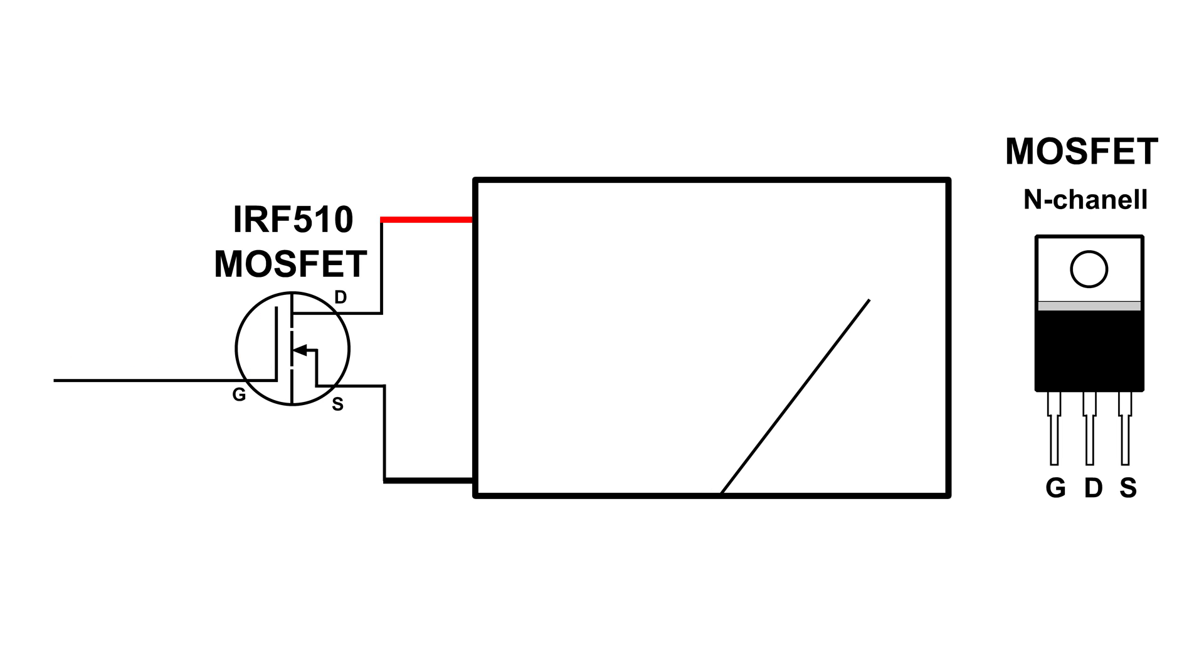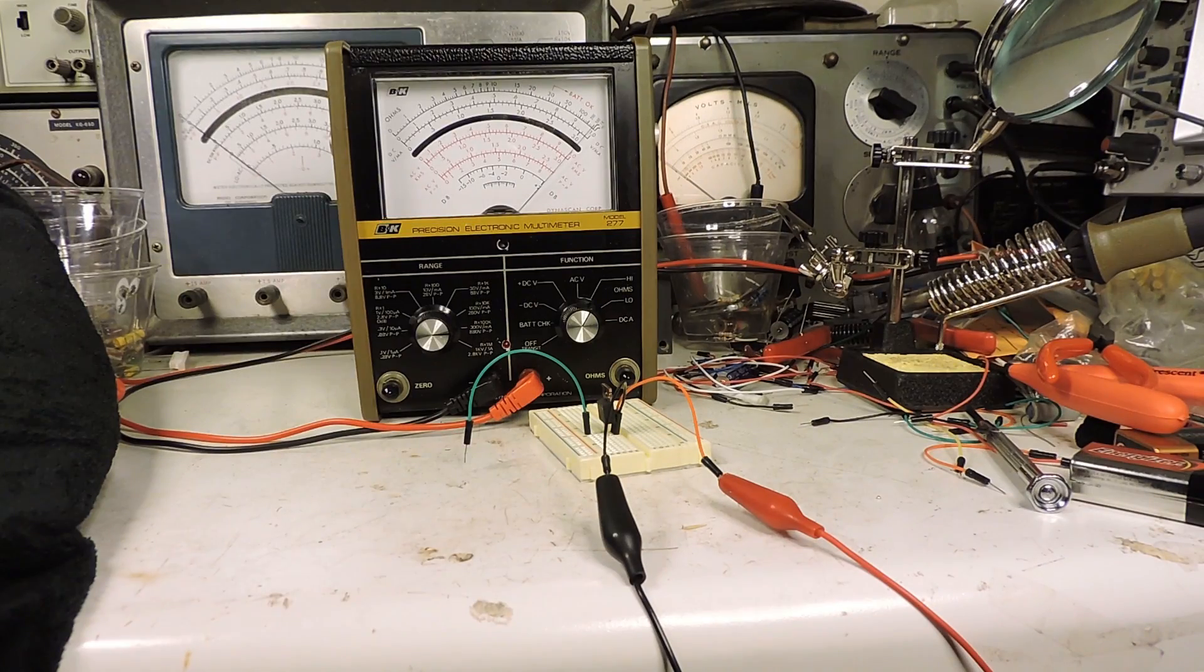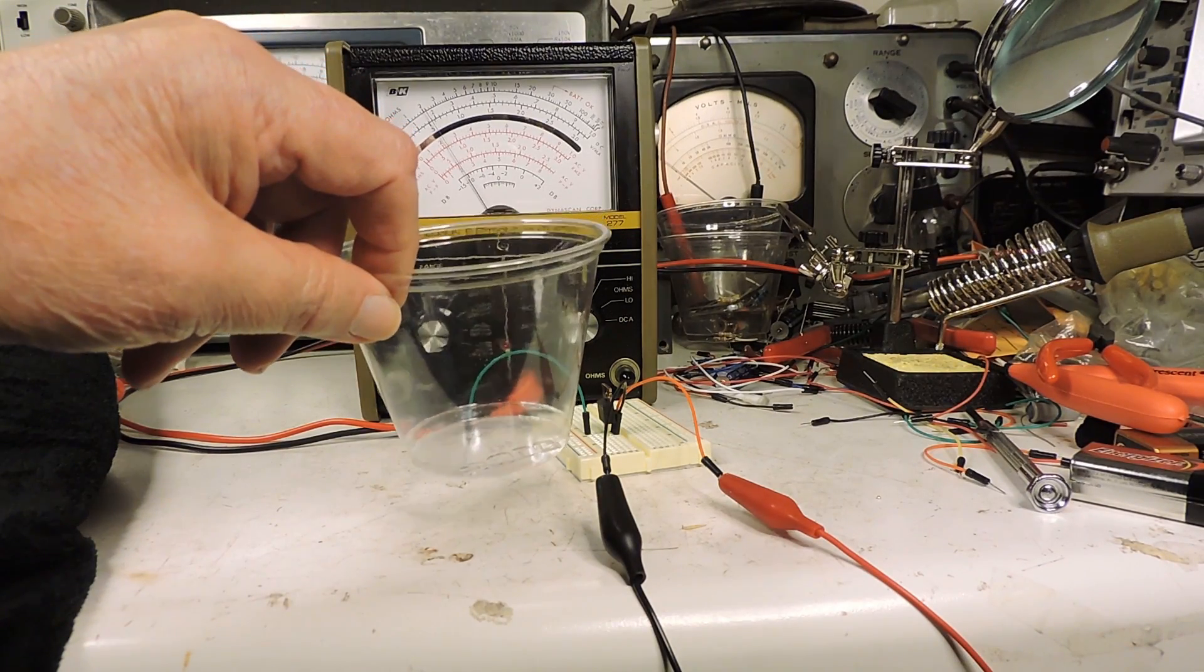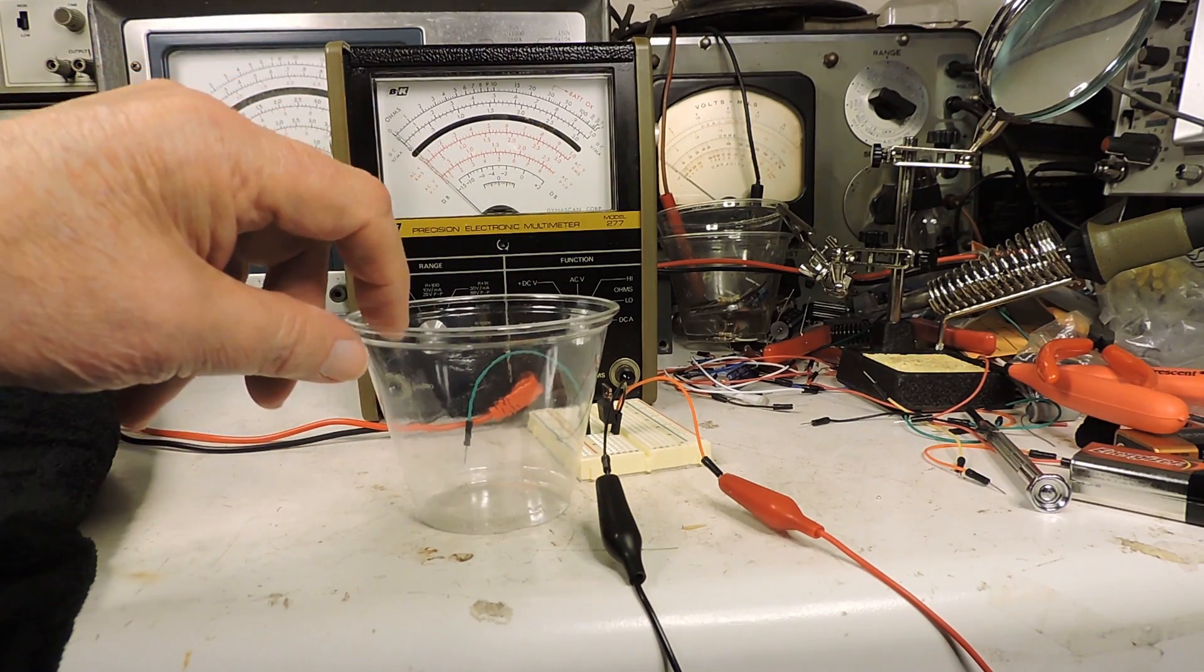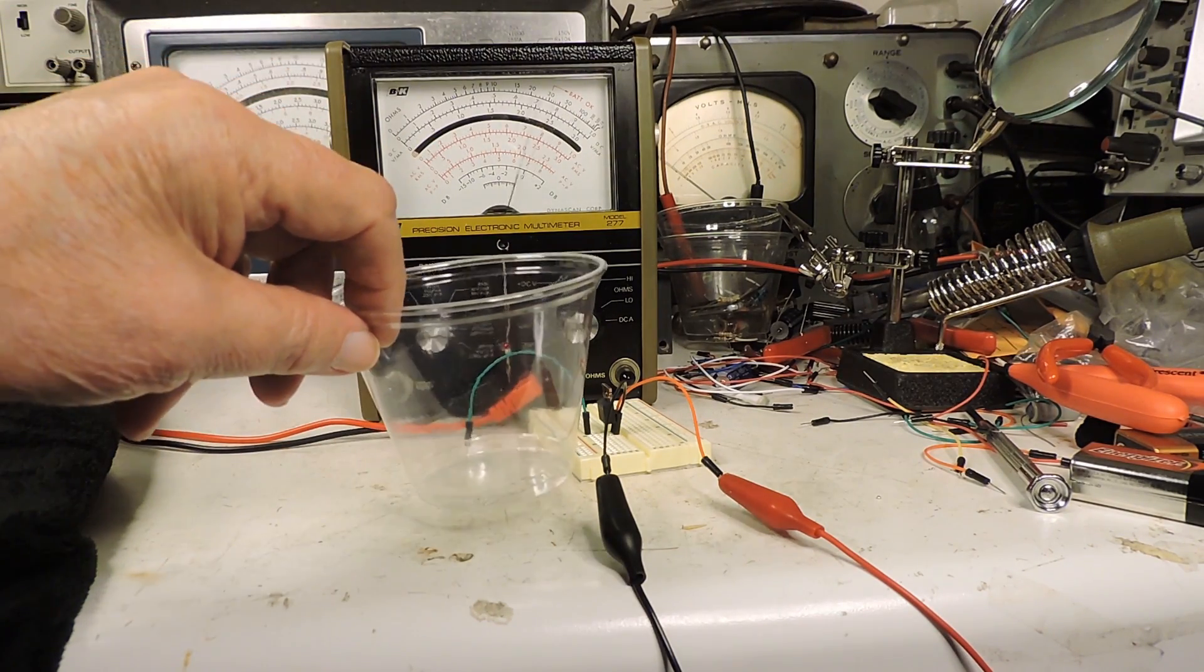And then when I moved the cup away the charge was no longer there and we now had very high resistance. This little demonstration shows how sensitive MOSFETs are and that the gate is very high in impedance.